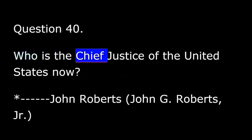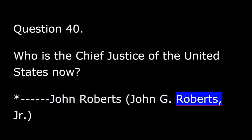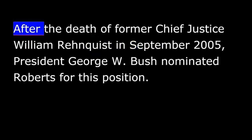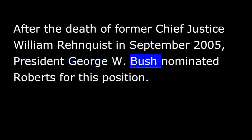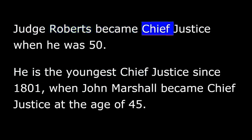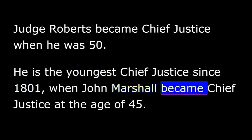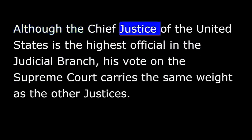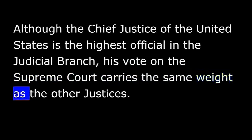Question 40. Who is the chief justice of the United States now? John G. Roberts, Jr. John G. Roberts, Jr. is the 17th chief justice of the United States. After the death of former Chief Justice William Rehnquist in September 2005, President George W. Bush nominated Roberts for this position. Judge Roberts became Chief Justice when he was 50. He is the youngest Chief Justice since 1801, when John Marshall became Chief Justice at the age of 45. Before he became Chief Justice, Judge Roberts served on the U.S. Court of Appeals for the District of Columbia Circuit. Although the Chief Justice of the United States is the highest official in the judicial branch, his vote on the Supreme Court carries the same weight as the other justices.